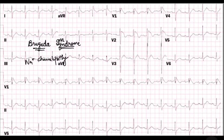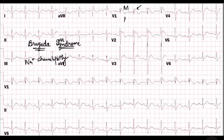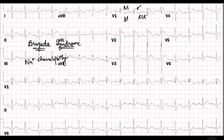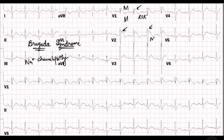So how to diagnose it? The first and foremost feature is there will be an incomplete right bundle branch block pattern. You see these M-shaped QRS complexes in V1 and V2. It is an RSR' pattern. It resembles the letter M, so in layman terms we call it the M-shaped pattern. If this is present, think of right bundle branch block.